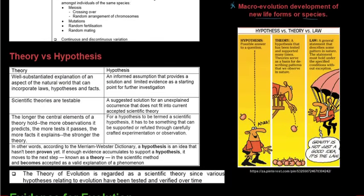Looking at the difference between a theory and a hypothesis: a theory is a well-substantiated explanation that has been proven multiple times by experiments or tests. A hypothesis is an informed assumption that provides a solution with limited evidence at the starting point, requiring further investigation. It starts with a hypothesis, and once multiple experiments have been conducted and verified over time, it becomes a theory.